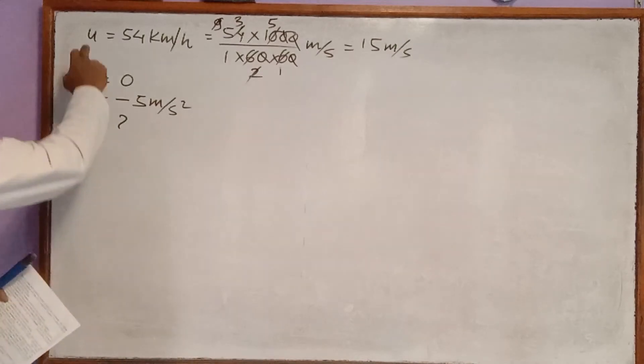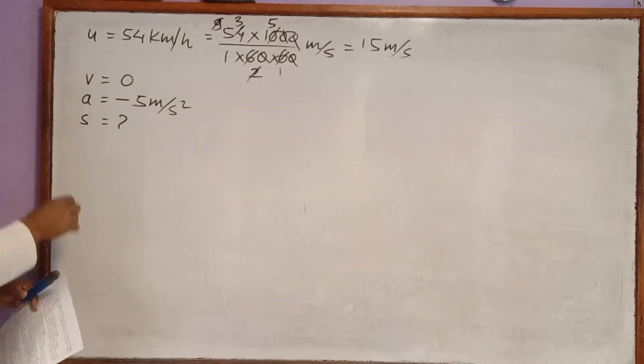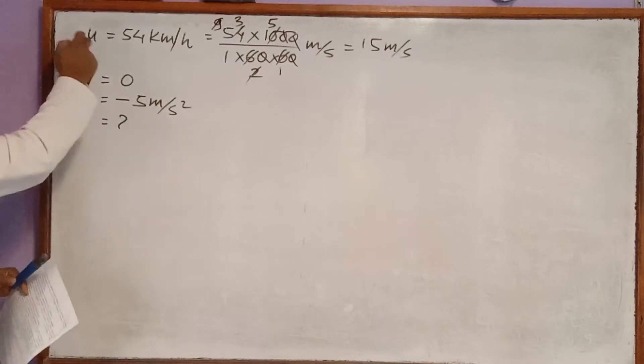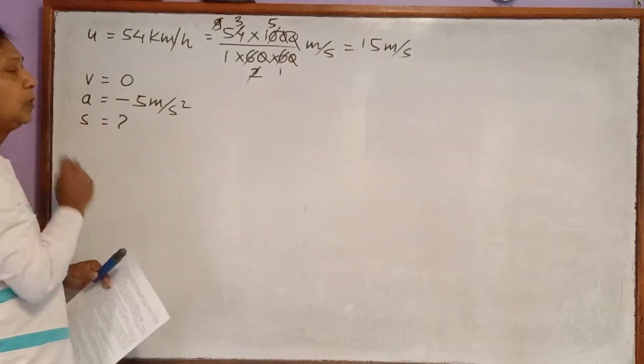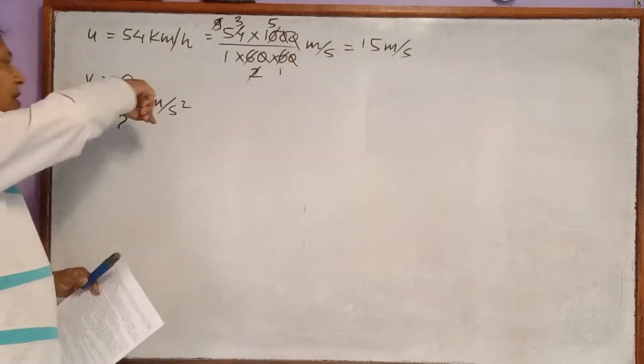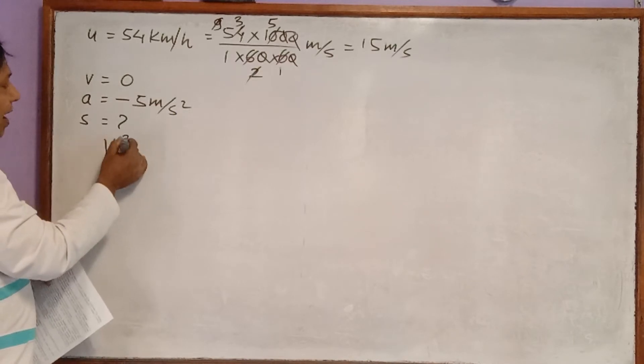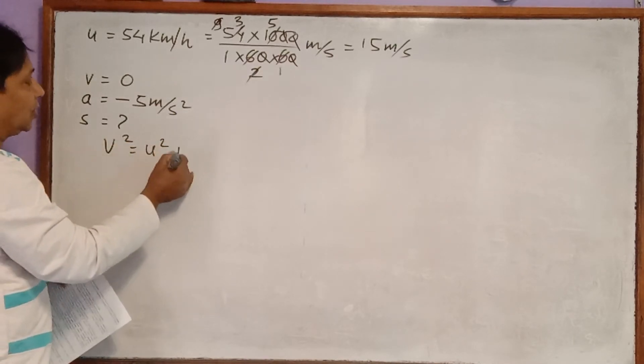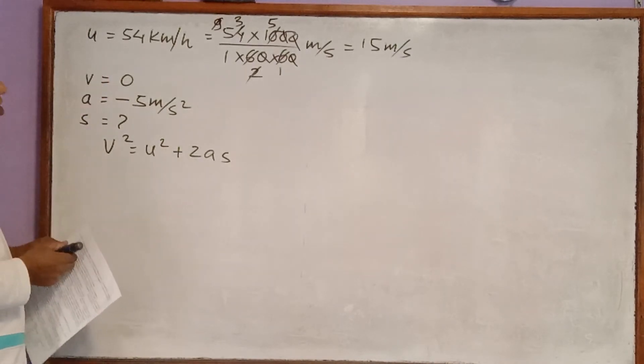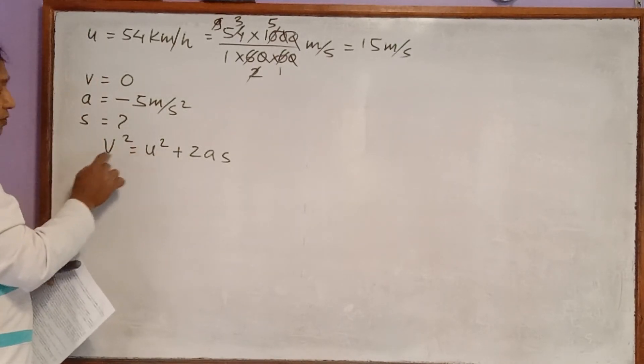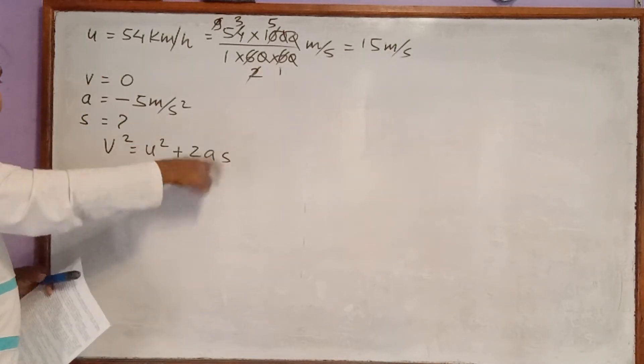That's why u, v, a - three physical quantities are given, and fourth one s we have to find out. Which equation of motion contains all these symbols? If you remember, there is one: v square equal to u square plus 2 a s. Here all these symbols are present.